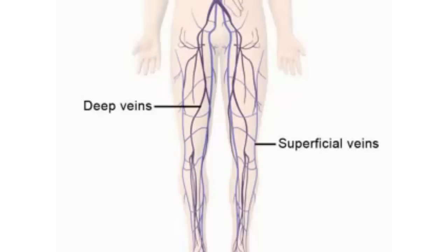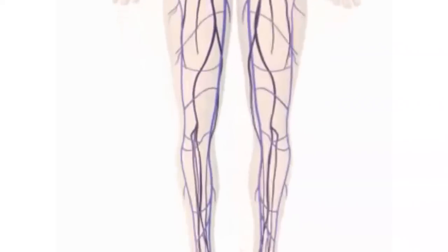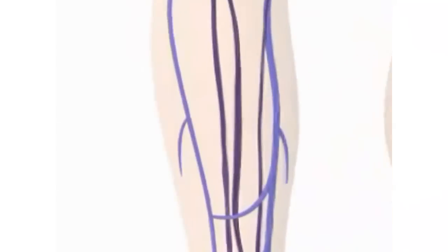The superficial veins lie below the surface of the skin. Here we show the position of the leg veins. The deep veins run between muscles of the leg.